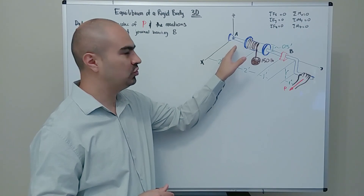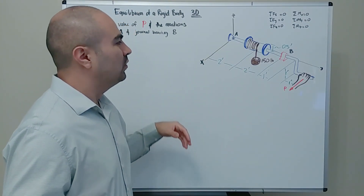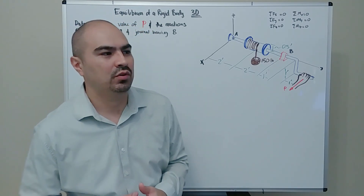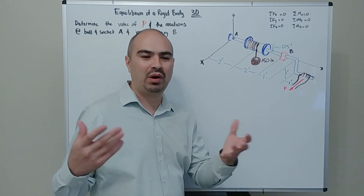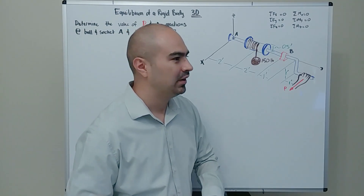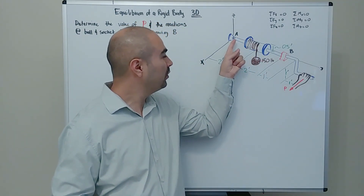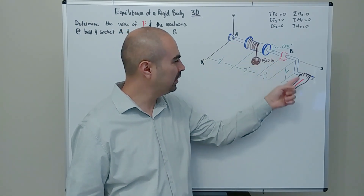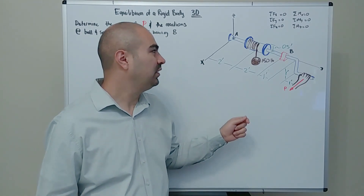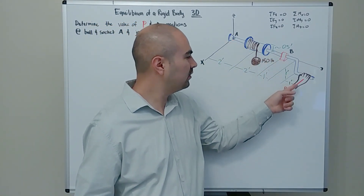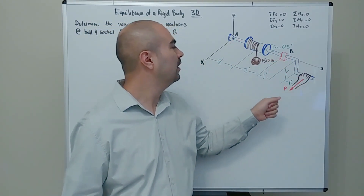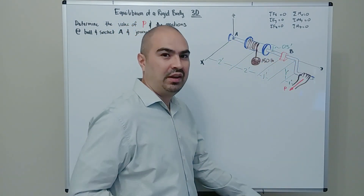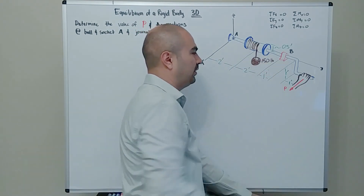Let's convert this drawing into a free body diagram. The first step is to identify the body you want to draw the FBD for. In this problem, we want to figure out what's going on at ball-and-socket A, journal bearing B, and force P — all of these forces and reactions are touching or intersecting the hand crank, so the free body diagram will be for the hand crank.